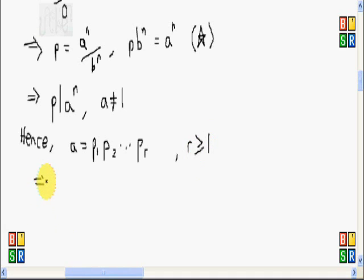So therefore, if we rewrite the equation, if we rewrite this one in another form, then we will have p divides p sub 1, p sub 2, up to p sub r raised to the nth power.